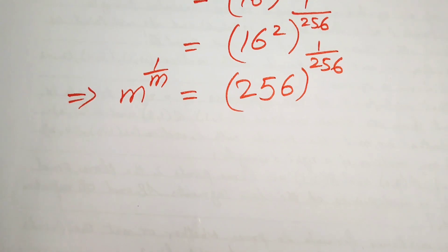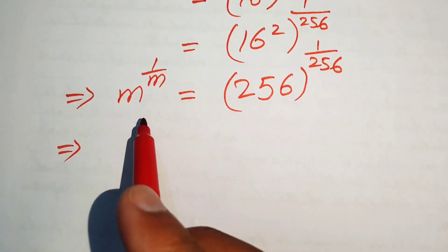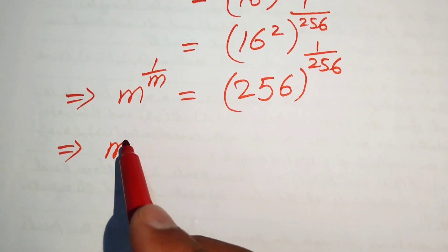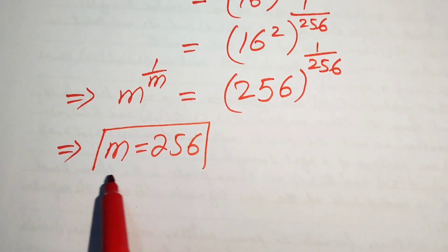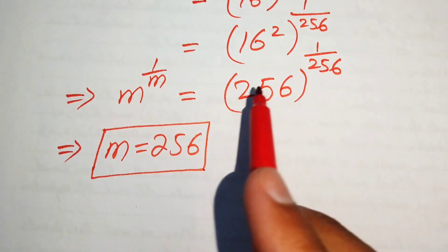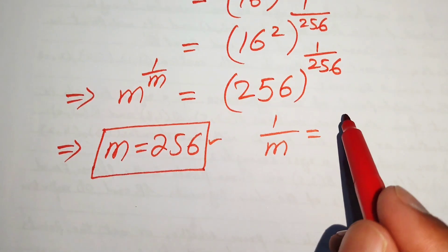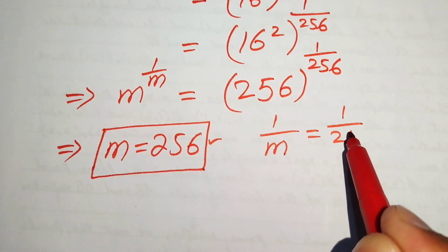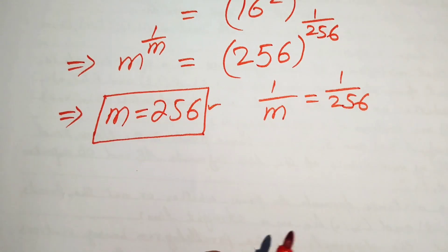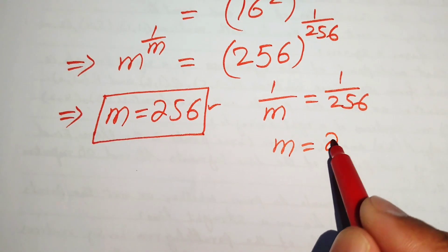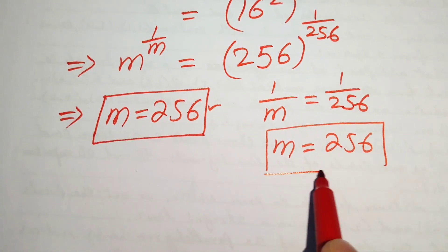Now we compare both sides. Comparing the bases gives us m equals 256 directly. If we compare the exponents, 1 over m equals 1 over 256, we again get m equals 256. Taking the reciprocal of both exponents confirms the value of m is 256.